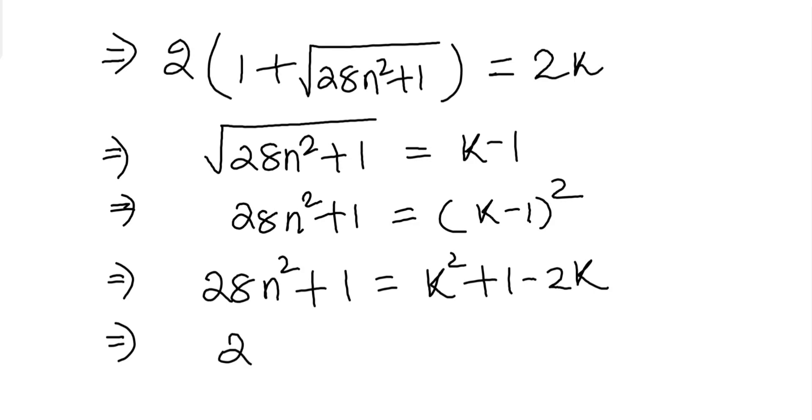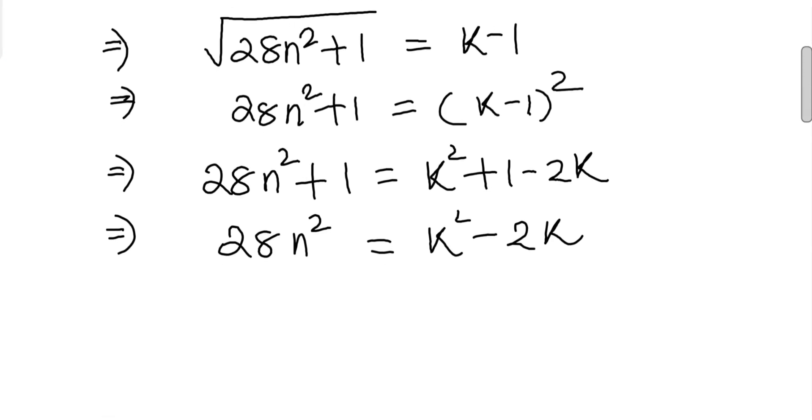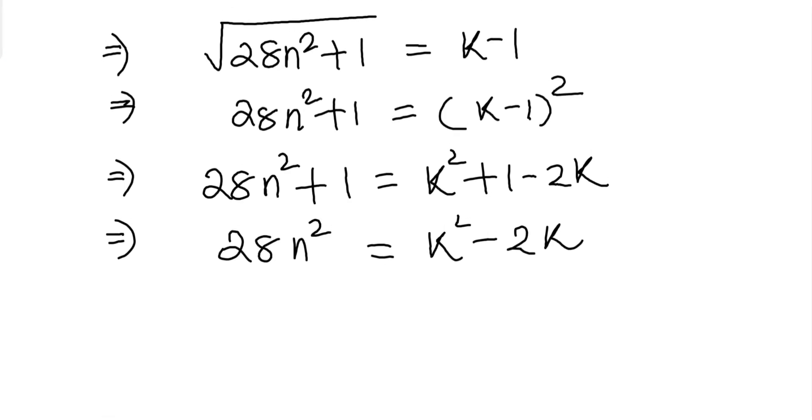Now cancelling +1 from both sides we have 28n² = k² - 2k. Now if you notice here again the same condition: left hand side is a multiple of 2 or even, so right hand side must also be even.